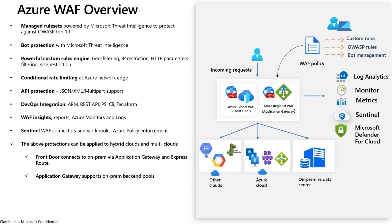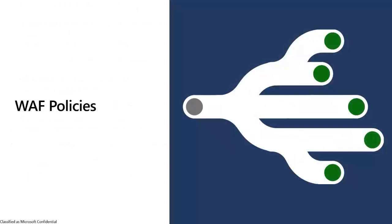We also have integration with Azure Policy Enforcement, which covers the governance side of things — what features you want to have in a particular WAF deployment — so you can govern those features and have consistency throughout your setup. Azure WAF protects web applications not only in Azure, but also outside of Azure, in hybrid clouds and multicloud scenarios, and we can also protect applications on the on-prem side since App Gateway supports on-prem backend pools. That's the overview of Azure WAF — I'll hand it over to Toby to cover WAF policies and rulesets.